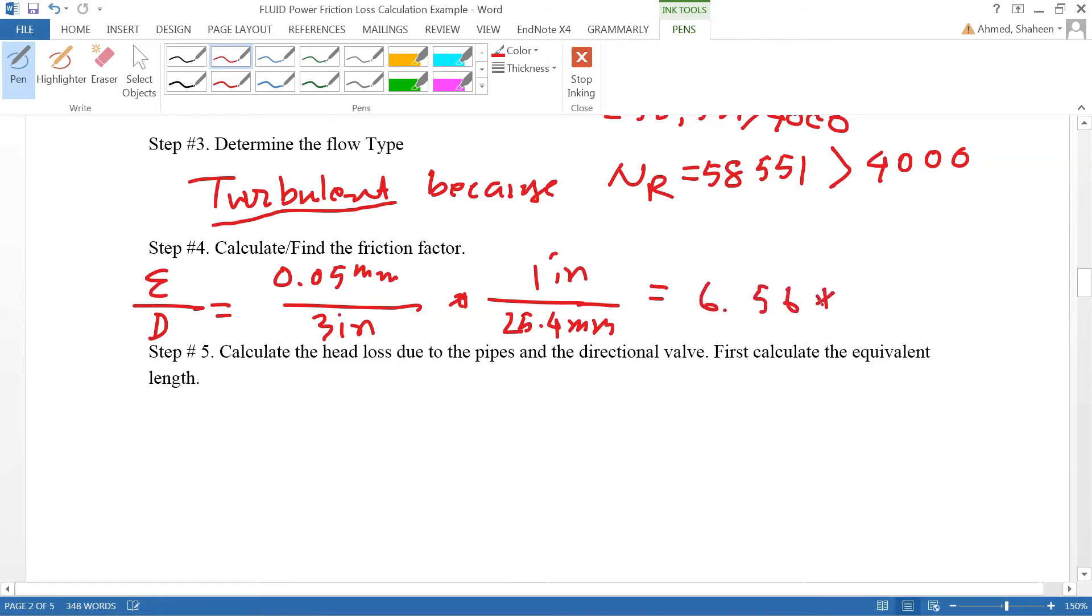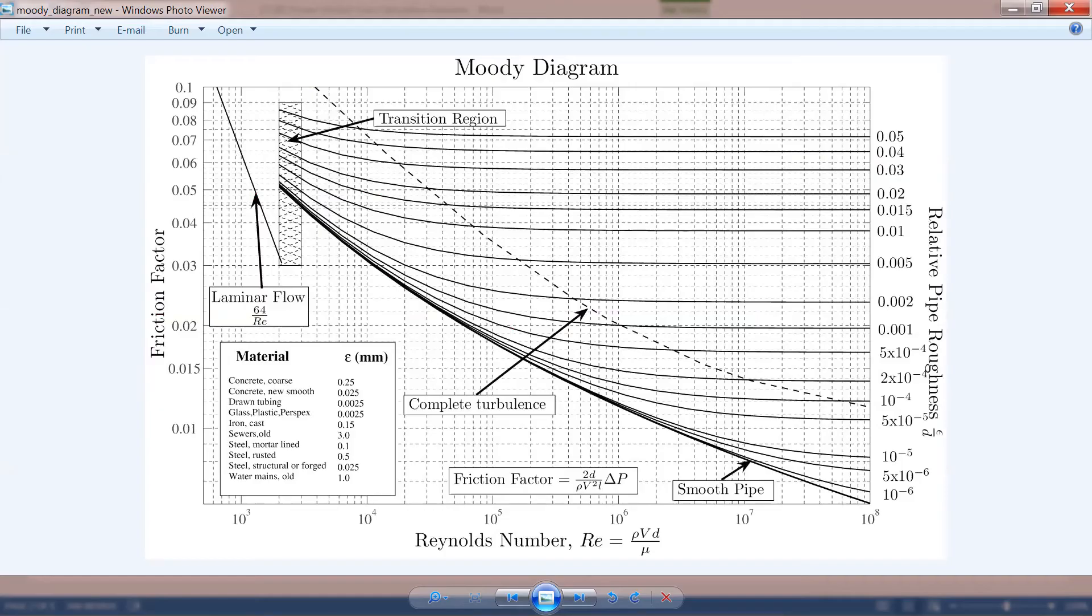6.56 times 10 to the power negative 4. So if I go to the table now, the Reynolds number is about 60,000. So let's go to the table. 10,000, 20,000, 30,000, 40,000... the 60,000 line is somewhere around this line.